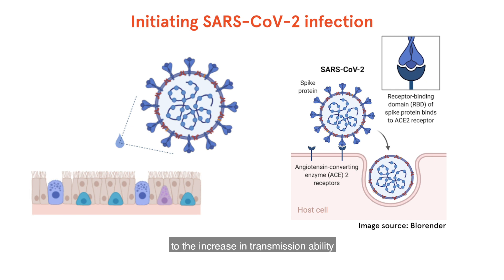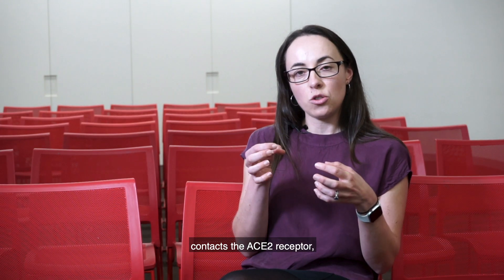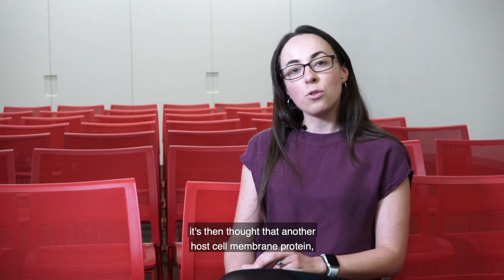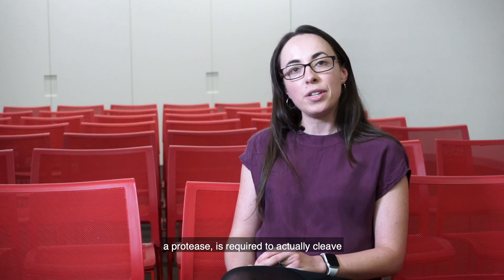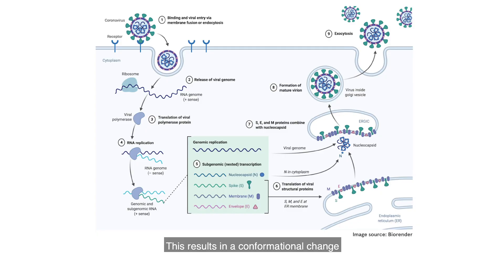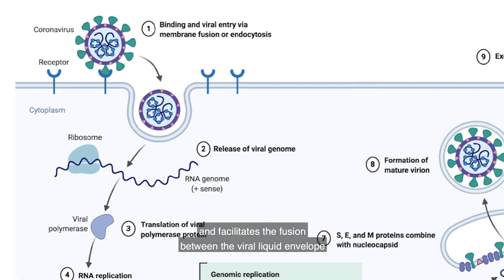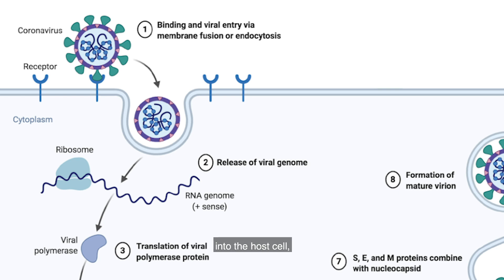This is thought to contribute to the increased transmission ability of this new coronavirus. When the spike protein on the outside of the virus contacts the ACE2 receptor, it's thought that another host cell membrane protein, a protease, is required to actually cleave the spike protein. This results in a conformational change in the arrangement of the spike protein, and facilitates the fusion between the viral lipid envelope and the host target cell. This allows the virus to inject its nucleic acid genome into the host cell, and thus begin the process of infecting the cell.